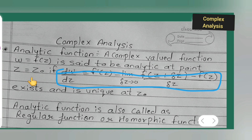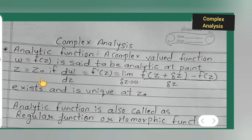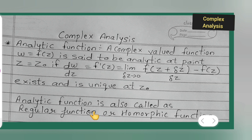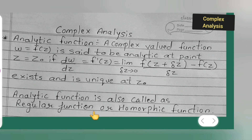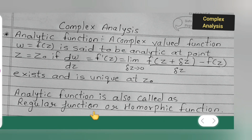A complex-valued function w = f(z) is said to be analytic at point z = z₀ if it satisfies this condition, and the derivative should exist and be unique at z₀. An analytic function is also called a regular function or holomorphic function.